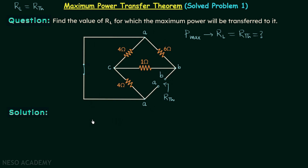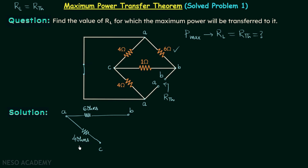After this we are going to rearrange this network from scratch. We have node A, node B, and node C. Between A and B we have a 6 ohm resistor. Between A and C we have a 4 ohm resistor. Between C and B we have a 1 ohm resistor. And between C and A we have another 4 ohm resistor. In this way we are done with all the resistors present.